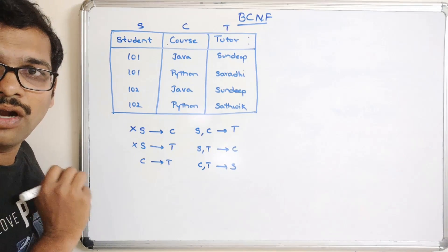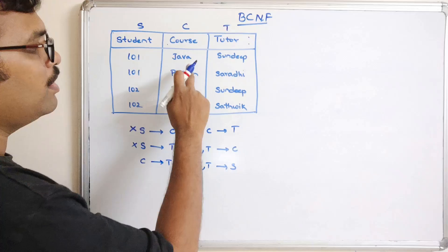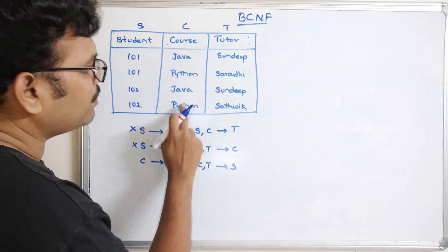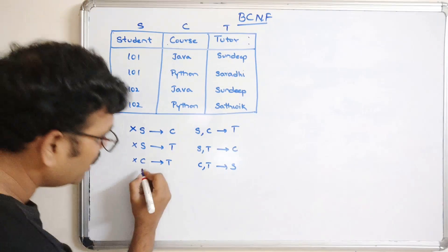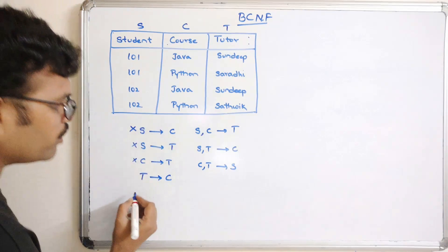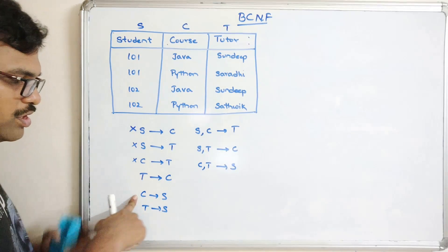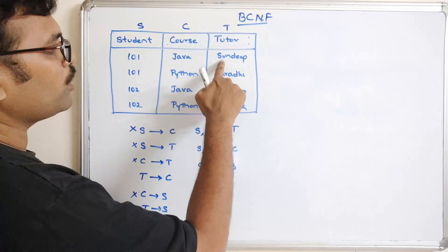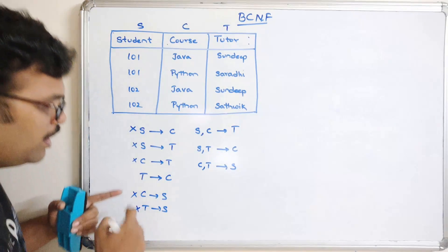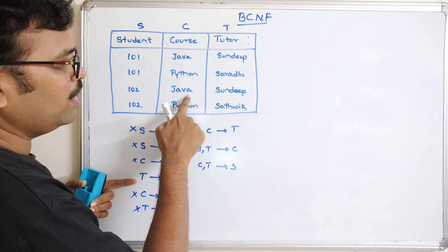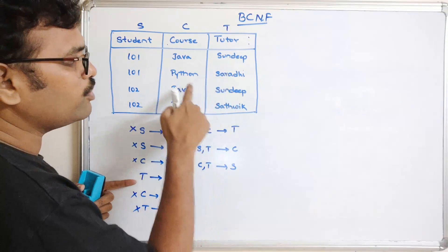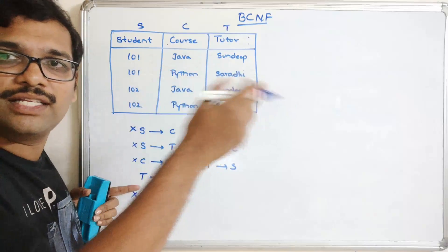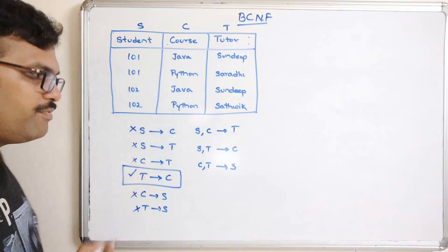For C→T: Java maps to Sandeep and Python maps to Sarvi — but Python also maps to Sarvi, so checking further it is not possible. For T→C: Sandeep→Java and Sarvi→Python — there are different X values but same Y values, which is fine. For the same X value we need the same Y value, so T→C is a valid functional dependency.